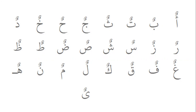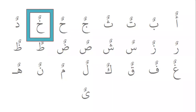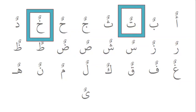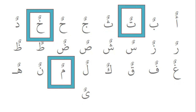For Tanwain with Fathah: Kha with Fathah becomes Kha, and with Tanwain Fathah it becomes Khan. Ta with Fathah and Tanwain Fathah becomes Tan. Mim with Dhamma is Mu, and Mim with Tanwain Dhamma becomes Mun.